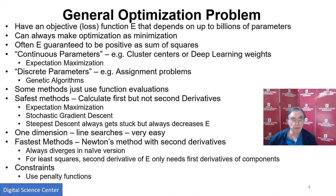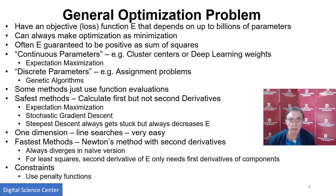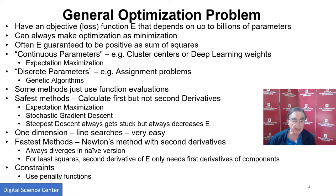Here we have a general optimization problem. When I started doing optimization, which was unfortunately 55 years ago, I used to have functions which depended on a few parameters — actually up to thousands, but typically just a few. Nowadays they're up to billions and they're going to get bigger and bigger as we build more complicated models. Optimization can always be thought of as a minimization. Often the things you're trying to minimize can be guaranteed to be mathematically bounded below — in practice, positive. Like if you have a sum of squares, that must always be positive.